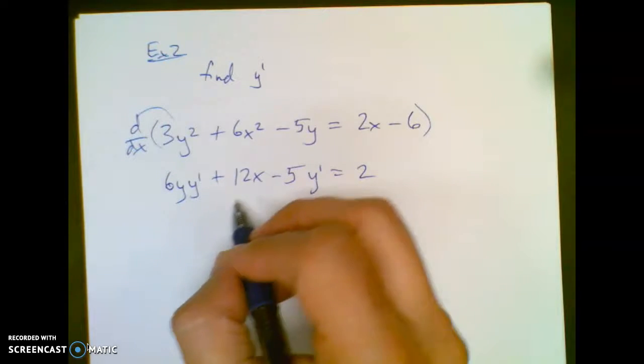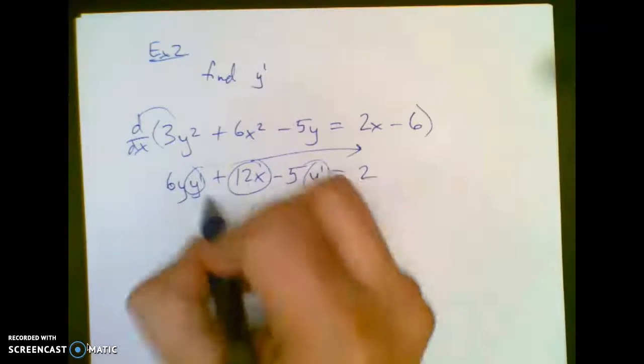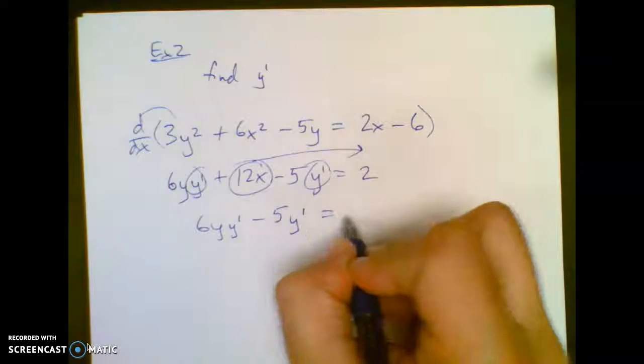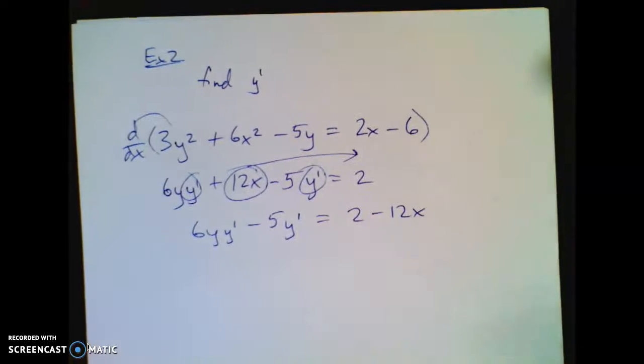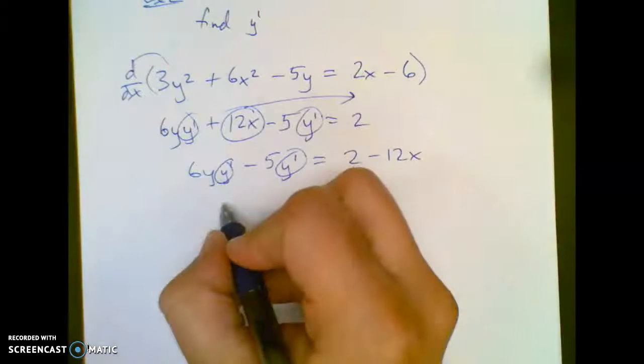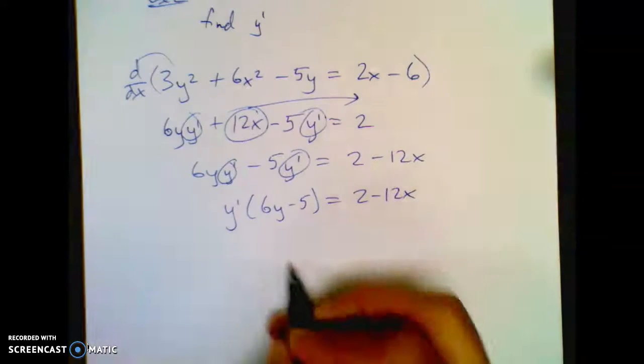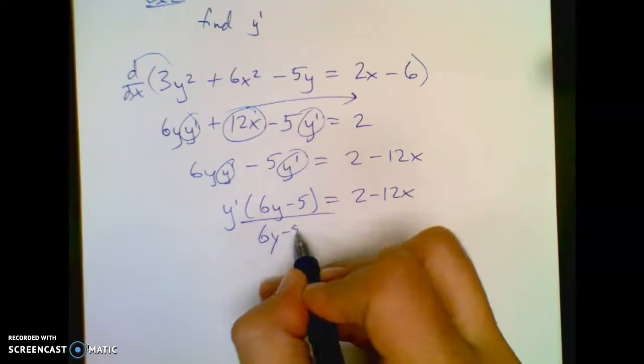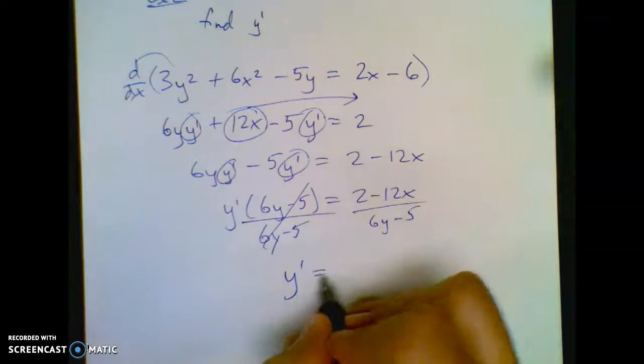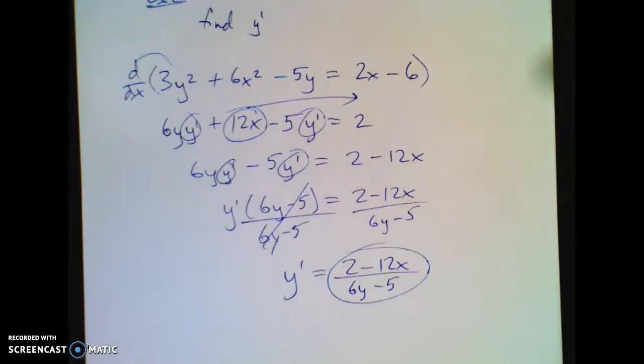Now my next step was collect all the y primes to one side. So I've got a y prime there. I've got a y prime there. Basically, I've got to get this 12x out of there. So I have 6y·y prime - 5y prime = 2 - 12x. You can also write negative 12x plus 2. That's fine. So I've done step two. Step three is, if you notice there's more than one, factor it out using GCF, which is really not hard. And then divide by whatever monstrosity is here. Sometimes it's really ugly. Whatever you do to the one side, you do to the other. And you'll have y prime equals (2 - 12x)/(6y - 5). Ta-da! That's the answer. Not bad, right?